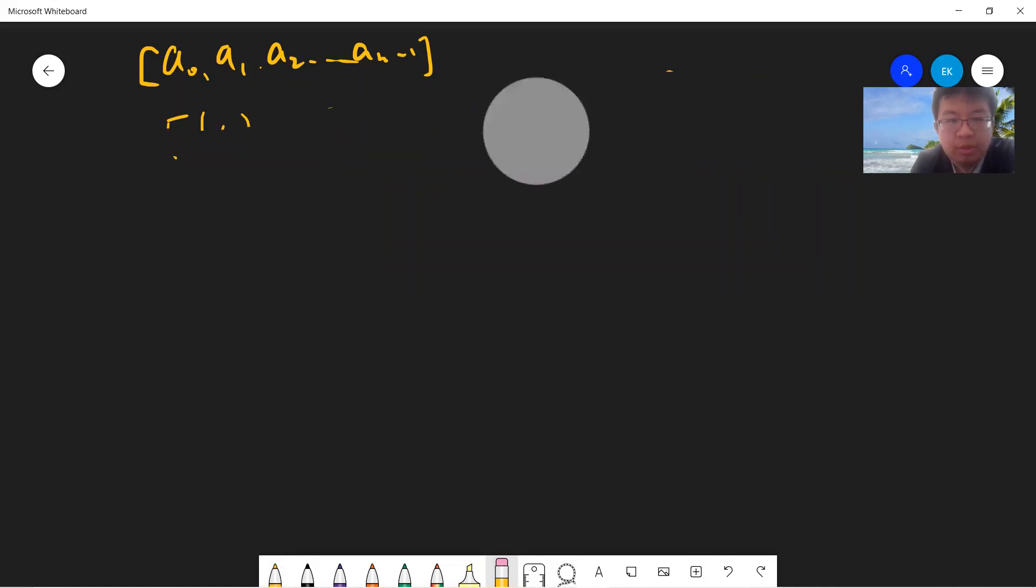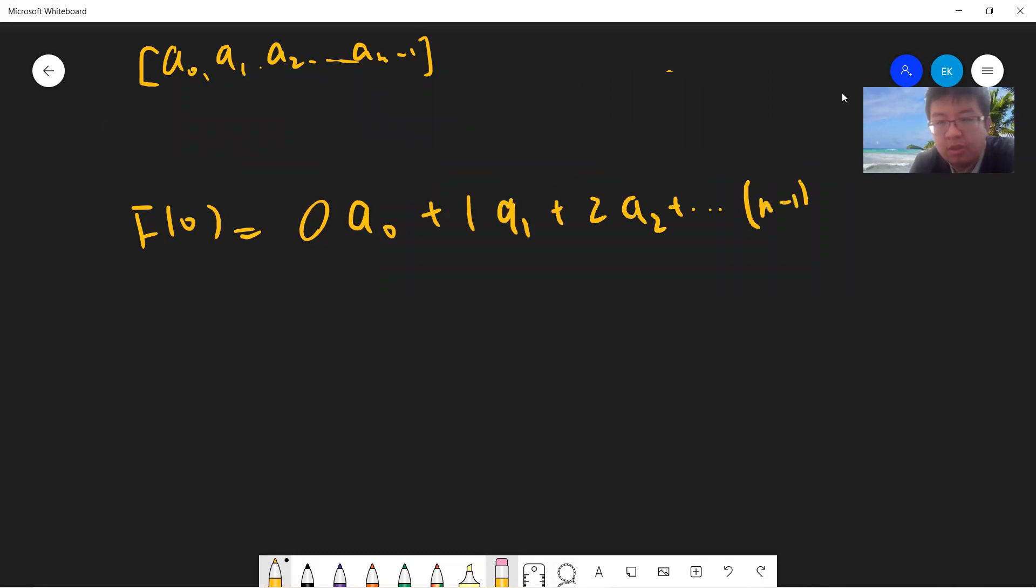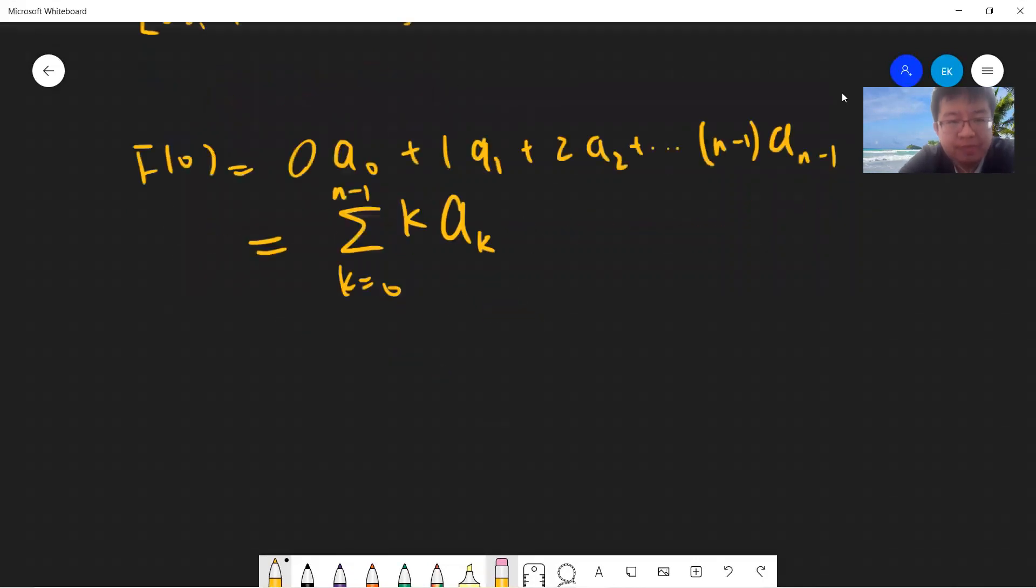Let me just write more terms so that you guys can easily follow. I can also write it as the summation of k times a_k, k from 0 to n-1.